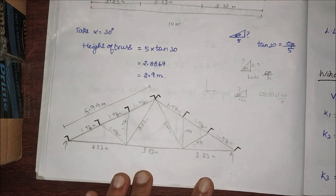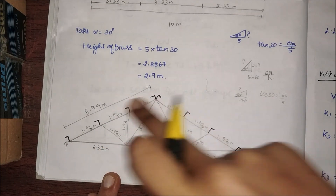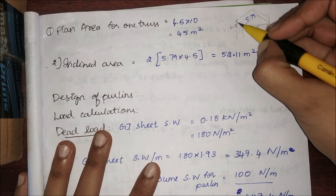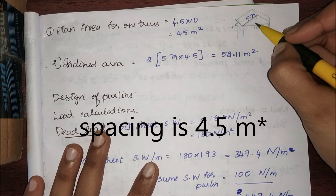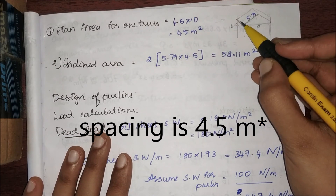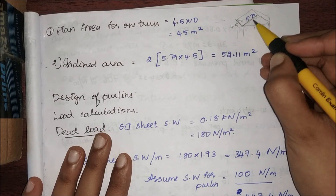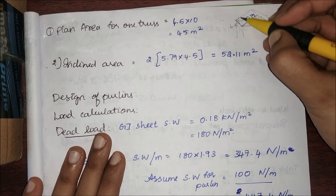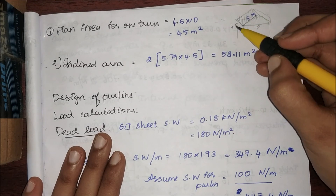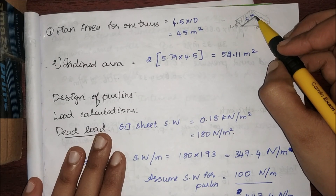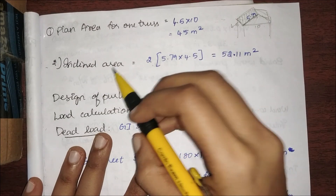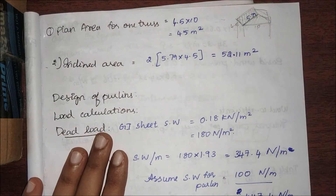I'm going to take an angle section (L-section) as my purlin. The plan area is 10 × 4.5 = 45 m². The hypotenuse (inclined rafter length) is 5.79 meters, so the inclined area is 4.5 × 5.79 × 2 = 52.11 m². Note that the inclined area will always be greater than the plan area.